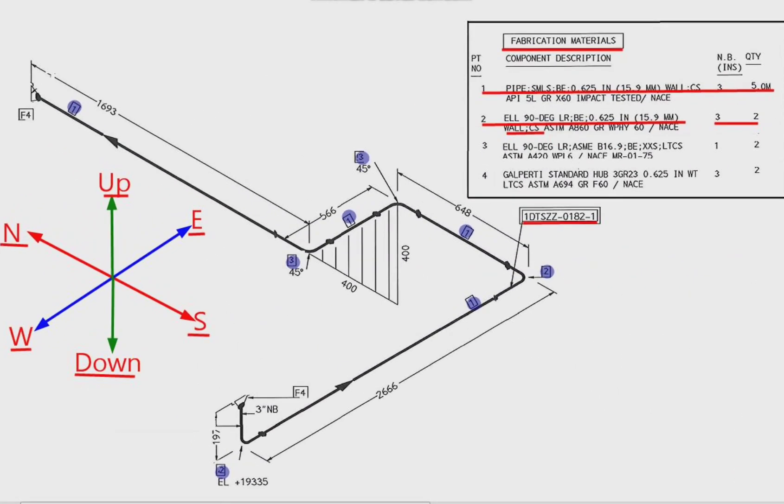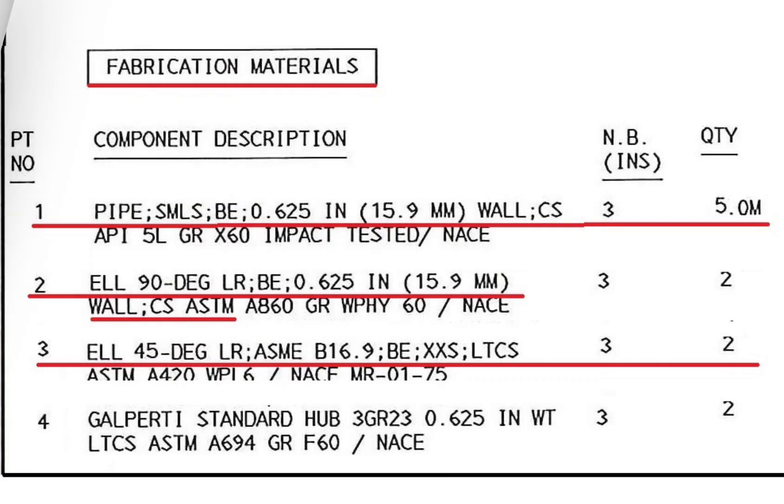Detail number 3 was used in two places in the pipe drawing. The item number 3, elbow 45 degree, long radius, 0.625 inch i.e. 15.9 wall thickness, the size is 3 inch, the material is carbon steel, the quantity is 2 pieces.